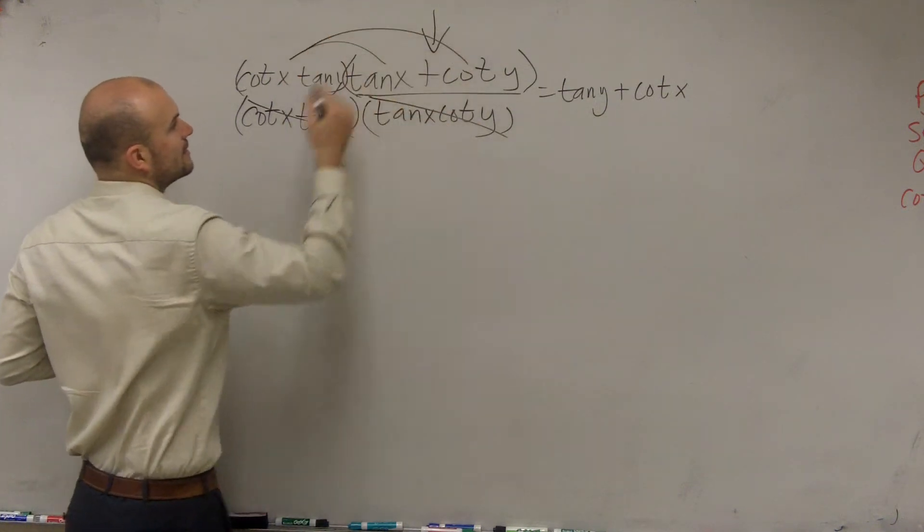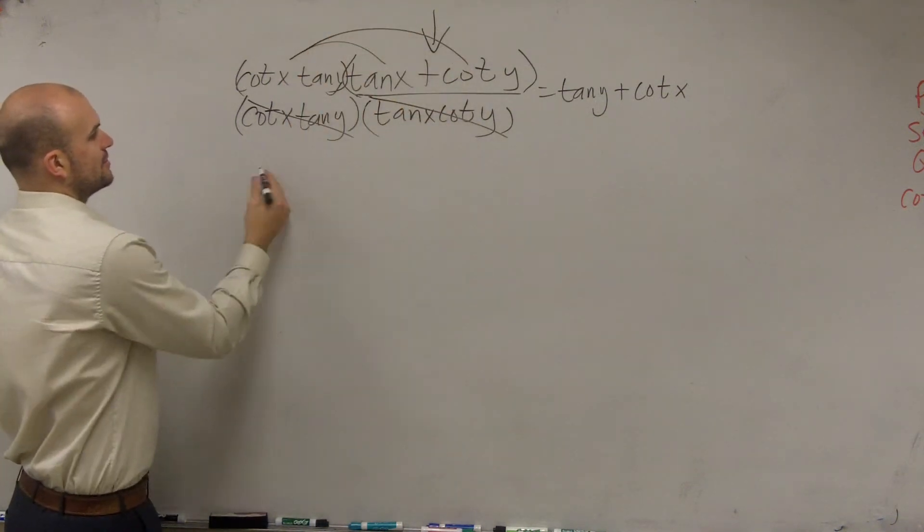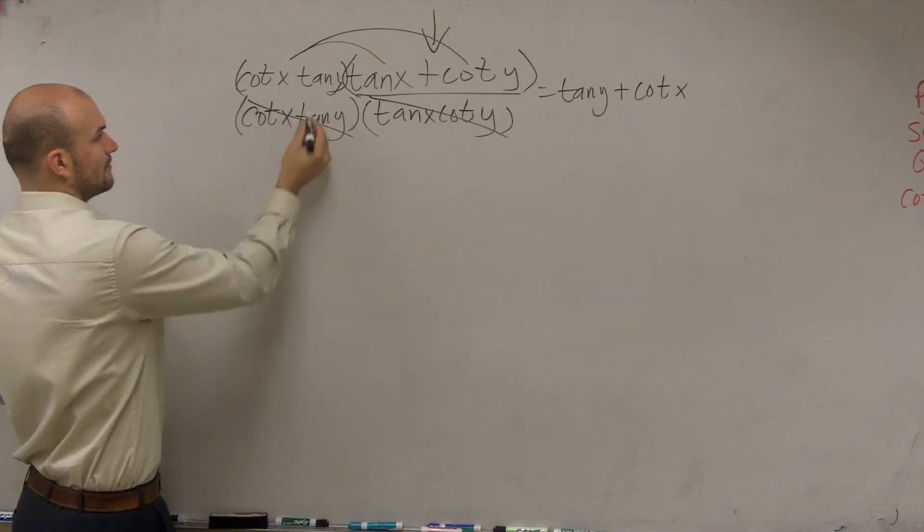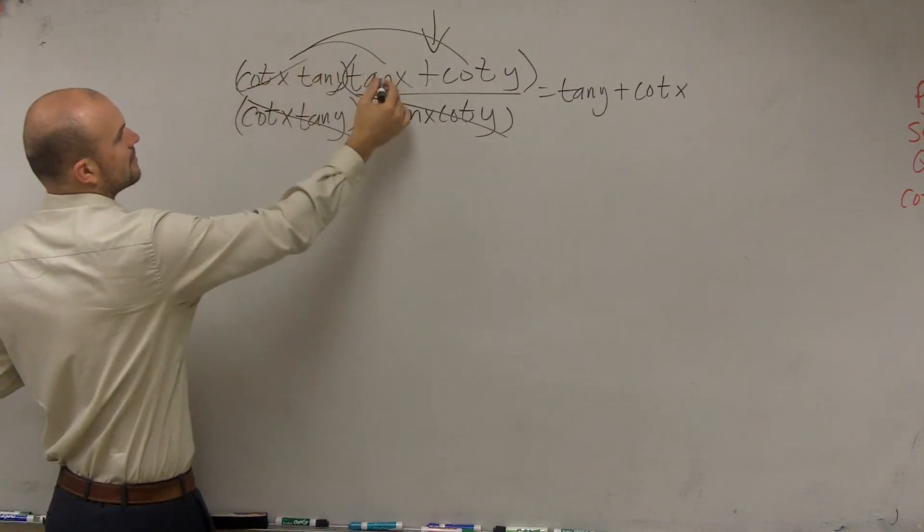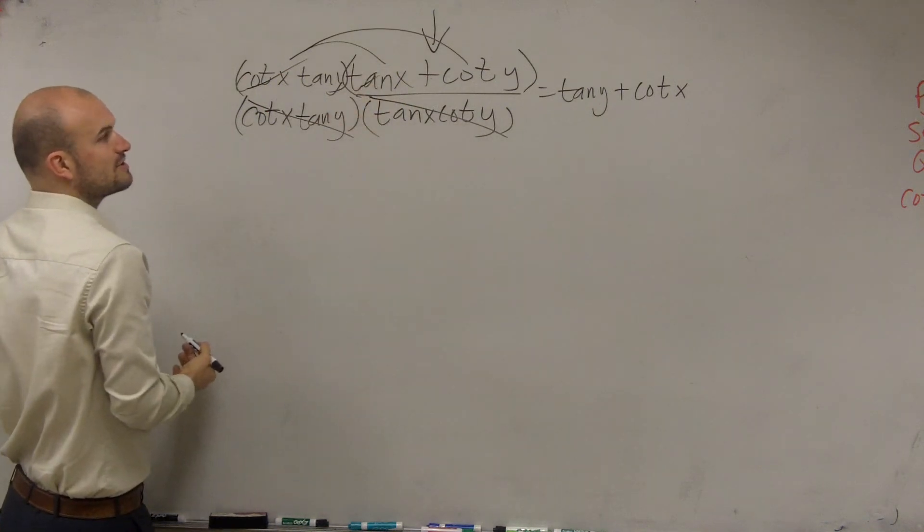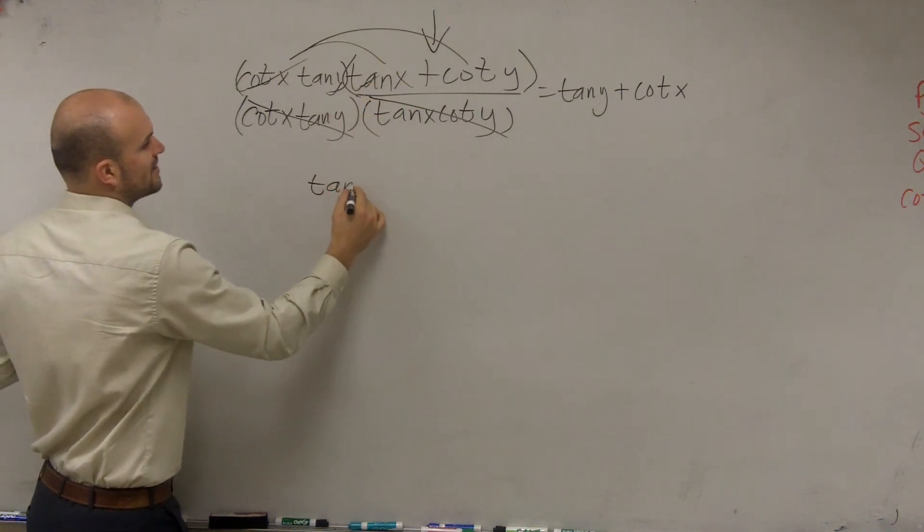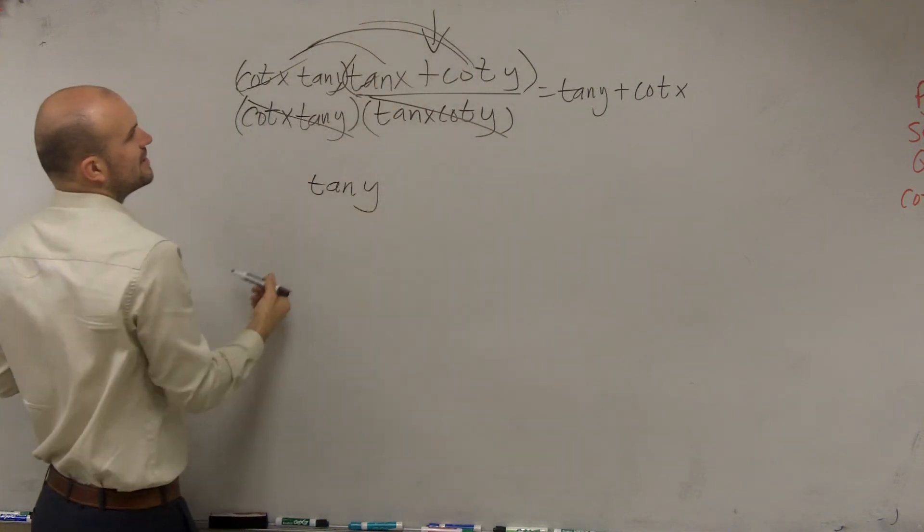But remember, on your numerator, you're going to have to apply distributive property. So therefore, I'll have... Actually, when multiplying these, again, you notice that I'm left with... Those are reciprocals of each other, so I'm just going to be left with tangent of y.